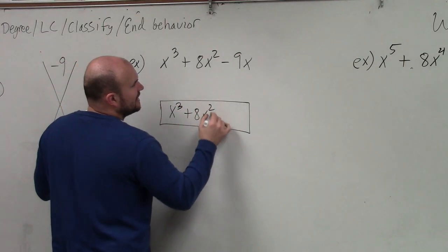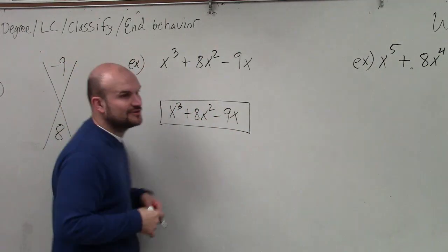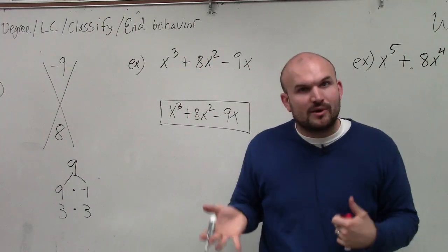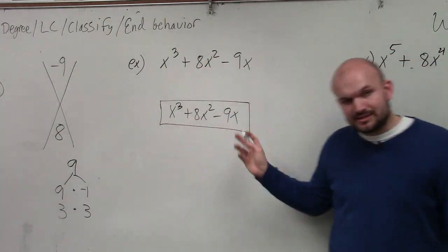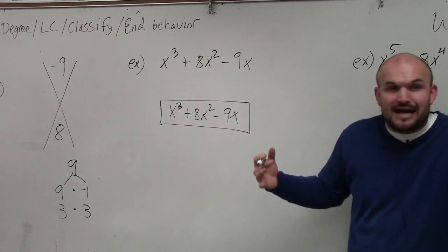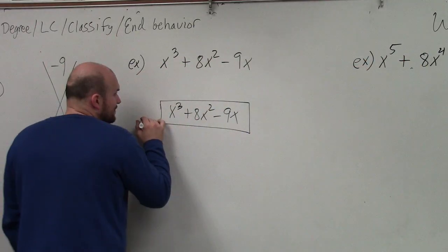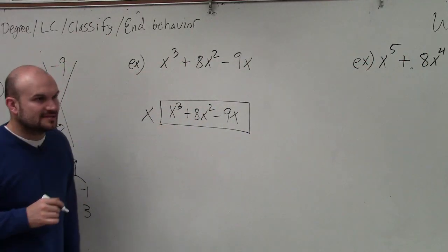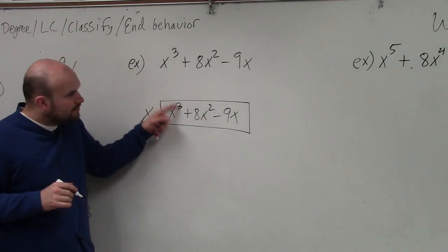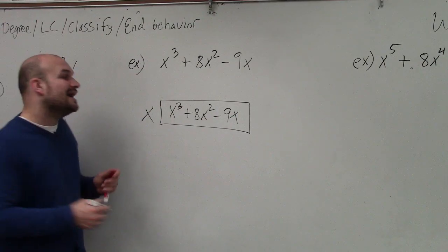So what we do is, a lot of times, again, I like to represent factoring by areas and squares and rectangles, alright? So if you guys look at this here, if I say x is common between all of them, then I'm going to make x one of the side lengths. So x times what gives me x cubed? x squared, right?